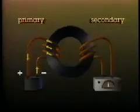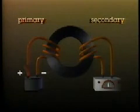However, when the primary coil was disconnected, current was again briefly generated in the secondary coil. Only this time the flow was in the opposite direction. Changing the current in the primary coil somehow induced a current in the secondary coil.